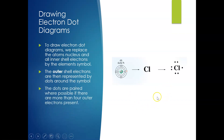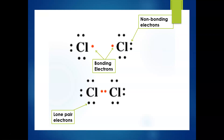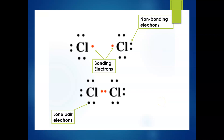The dots are paired where possible if there are more than four outer electrons present. So you see how we've paired them: one-two, one-two, one-two — and then we've got one that's not part of a pair. Representing chlorine using electron dots, we've got two chlorine atoms joined and sharing those electrons — counting one through eight for each atom. The electrons not being used as part of the bond are called non-bonding electrons. The electrons that are part of the bond are called bonding electrons. Any pair of electrons not part of a bond are called lone pair electrons.